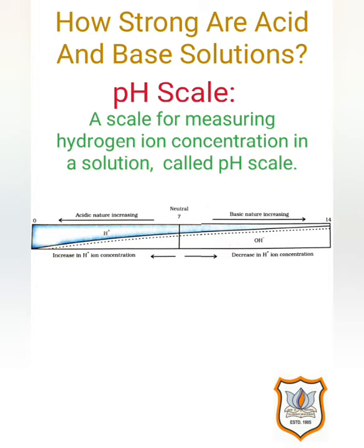pH should be thought of simply as a number which indicates the acidic or basic nature of a solution. Higher the hydronium ion concentration (H₃O⁺), lower will be the pH value. The pH of a neutral solution is always 7, while values less than 7 represent an acidic solution. As the pH value increases from 7 to 14, it represents an increase in OH⁻ ion concentration, that is basic.